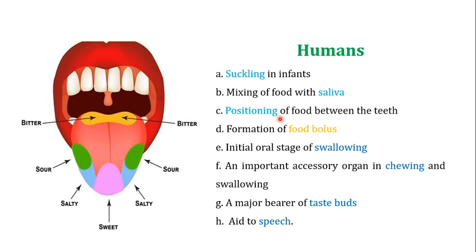The tongue is also responsible for positioning the food between the teeth, and with the help of the teeth you break the bigger food chunks into smaller ones, which are easier to digest. The tongue is also responsible for the formation of the food bolus — when food is mixed with the secretions of the salivary glands, that is known as a food bolus. The tongue is also responsible for the initial oral stage of swallowing and is an important accessory organ in chewing and swallowing.